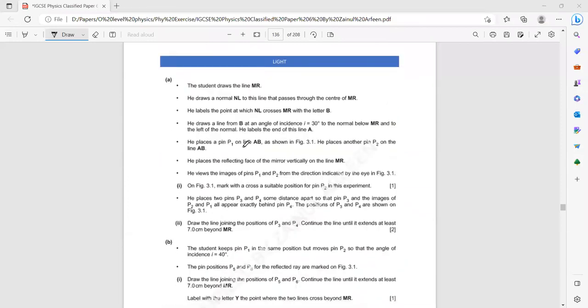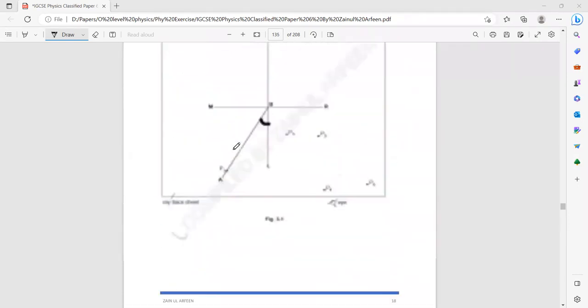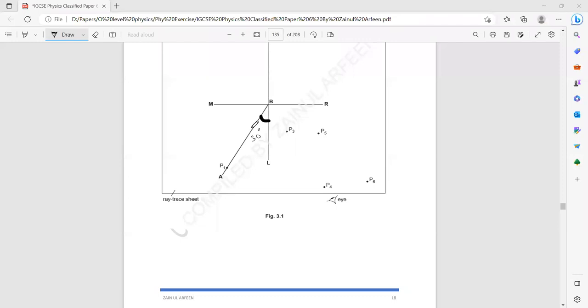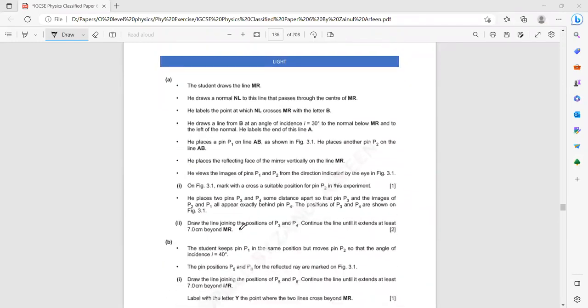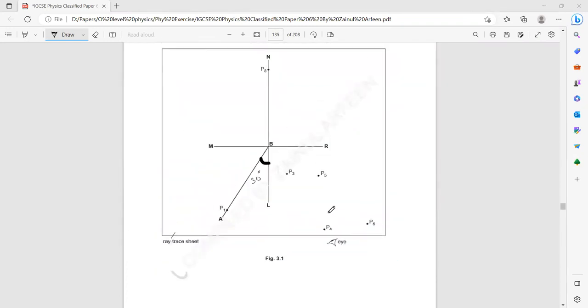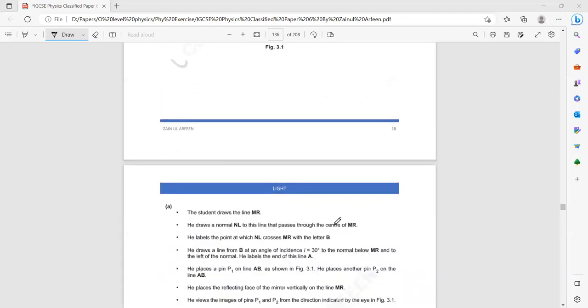Then he placed pin 1, P1 on the line and he placed another pin on the line. So he placed two pins on the line. P1 and P2 are not shown here because they did not ask till now. Then he places the reflection face of a mirror vertically. Then he viewed the pins in the mirror. He will look at pin P1 and P2 and where the image appeared, he places another pin P3 and P4.